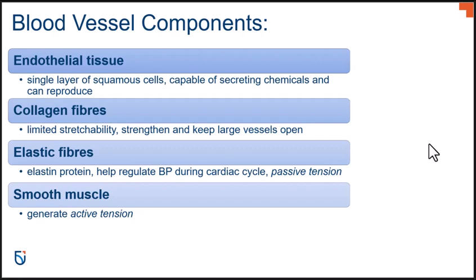Elastic fibers are composed of a protein called elastin. These fibers are capable of stretching more than 100% under certain physiological conditions and allow for recoil after distension — after stretching, they return to their original state without damage. This property of elastic fibers plays an important role in maintaining passive tension in the vessels of the cardiovascular system, which is required to maintain normal blood pressure levels throughout our entire cardiac cycle.